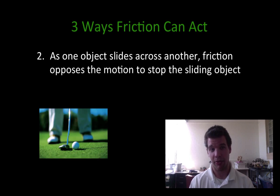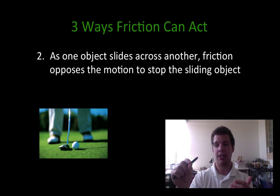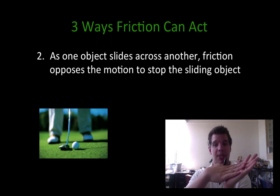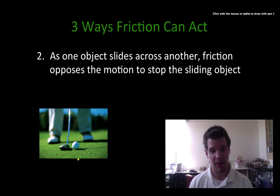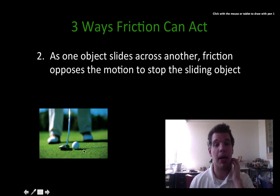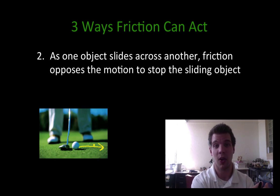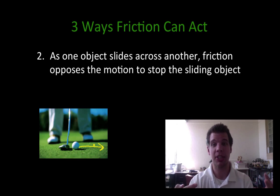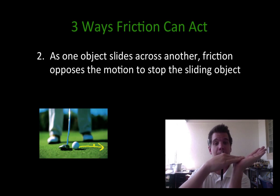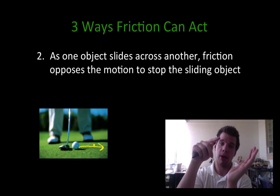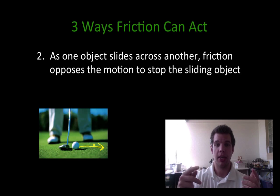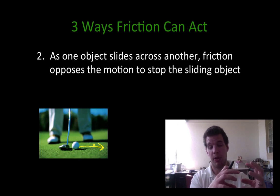The second way that friction can act is that as the object glides across another object — so it's actually moving — friction opposes the motion and eventually stops the sliding object. If you've ever played mini golf or real golf and gone to make a putt, you hit the ball and it starts moving, but if you don't hit it with enough force, it slows down and doesn't quite make it to the hole. That's because friction is pushing against that motion.